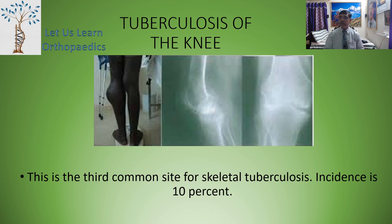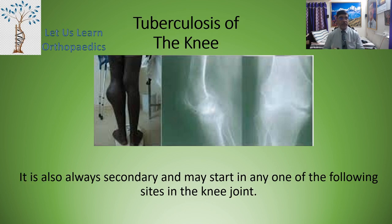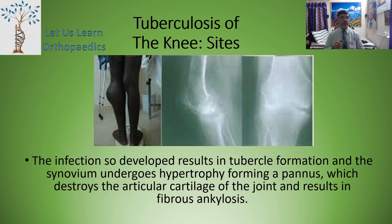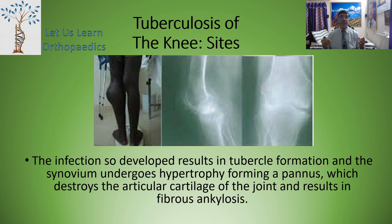Dear students, today we are going to discuss tuberculosis of the knee joint. This is the third common site for skeletal tuberculosis and the incidence is 10%. It is always secondary and it may start at any one of the following sites in the knee joint: most commonly it starts in the synovium, then at the subchondral bone of the distal femur, proximal tibia, or the patella, and there may be a juxta-articular osseous focus. The infection results in tubercle formation and the synovium undergoes hypertrophy forming a pannus, which destroys the articular cartilage and results in fibrous ankylosis.